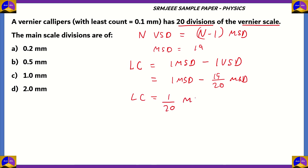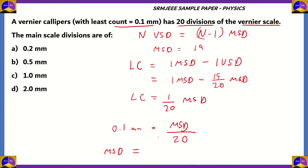The least count is given as 0.1 mm, so 0.1 mm equals MSD divided by 20. Therefore the main scale division equals 20 times 0.1, which is 20 divided by 10, equal to 2 millimeters. So the correct option is option D: 2 millimeters.